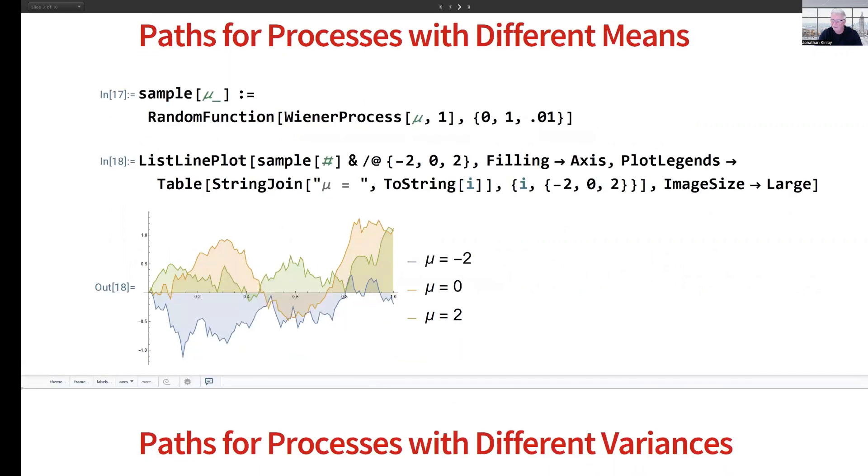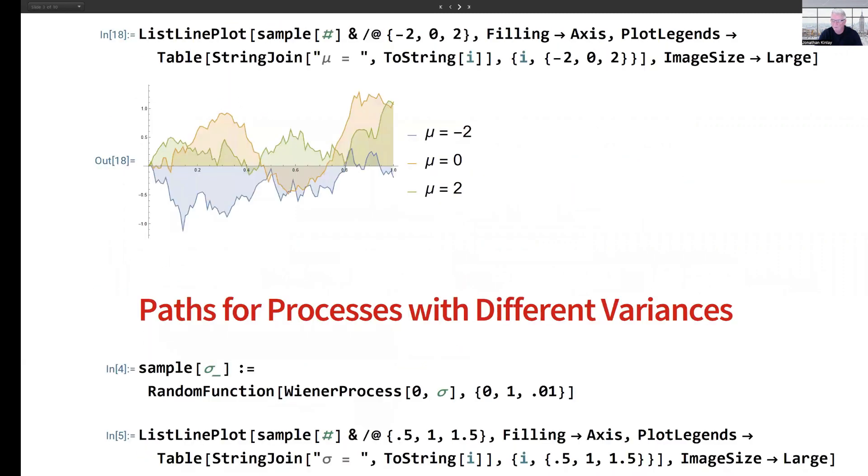Let's go on now to look at examples from processes that have the same mean but with different variances. This time, I'll define a function that creates a Wiener process with zero mean and varying standard deviation sigma, again over the time interval from 0 to 1.